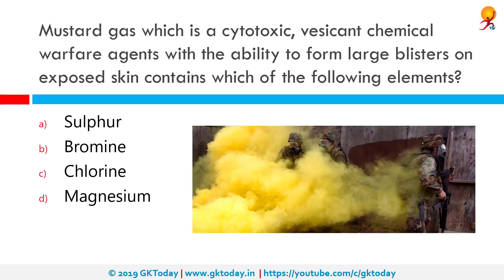Mustard gas, which is a cytotoxic vesicant chemical warfare agent with the ability to form large blisters on exposed skin, contains which of the following elements? Correct answer is sulfur. Sulfur mustard, commonly known as mustard gas, is the prototypical substance of the sulfur-based family of cytotoxic vesicant chemical warfare agents, which can form large blisters on exposed skin and within the lungs.